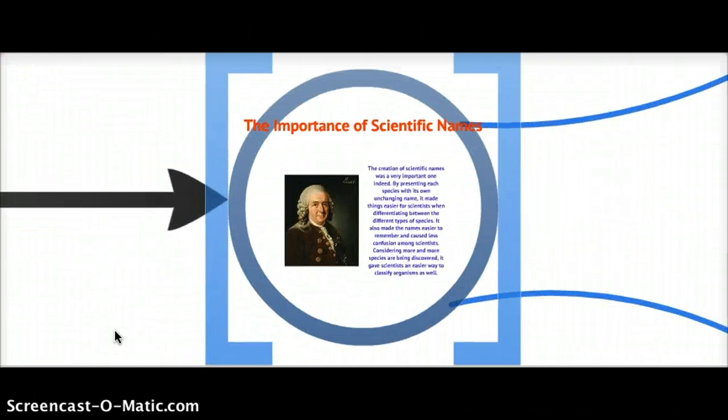By giving each species an unchanging name, scientists could easily differentiate between them. It also made remembering them easier, and naming and classifying newfound species was a piece of cake.